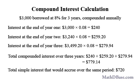By comparison, the simple interest over that three-year period would be P times R times T, or $3,000 times 0.08 times 3, which is $720 — a difference of $59.14.